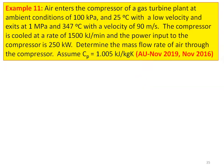Example number 11, from the university question paper November 2019 and November 2016. Air enters the compressor of a gas turbine plant at ambient conditions of 100 kilo Pascal and 25 degrees Celsius with low velocity, and exits at 1 mega Pascal and 347 degrees Celsius with a velocity of 90 meters per second. The compressor is cooled at a rate of 15,000 kilojoules per minute and the power input to the compressor is 250 kilowatts. Determine the mass flow rate of air through the compressor. Assume Cp equal to 1.005 kilojoules per kilogram Kelvin.